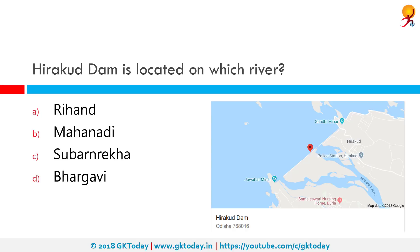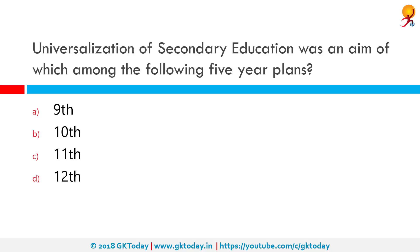Hirakud Dam is located on which river? As you can see on the map, it is in Orissa and is built across the Mahanadi River. The dam is one of the world's longest earthen dams.